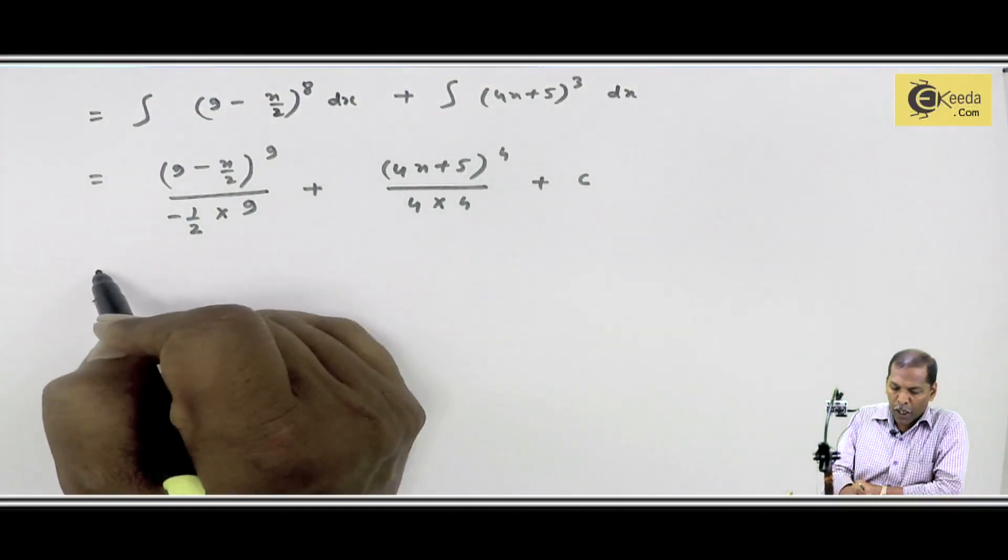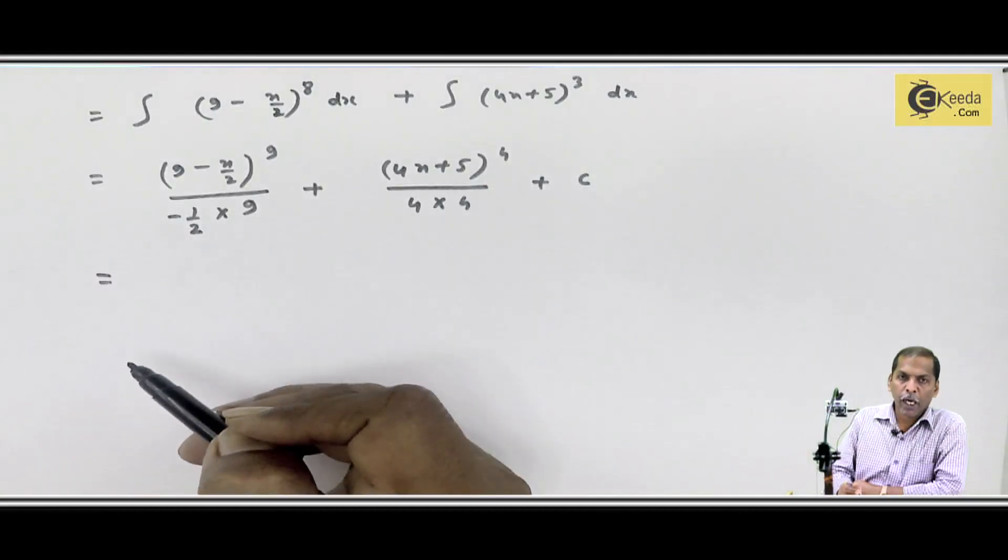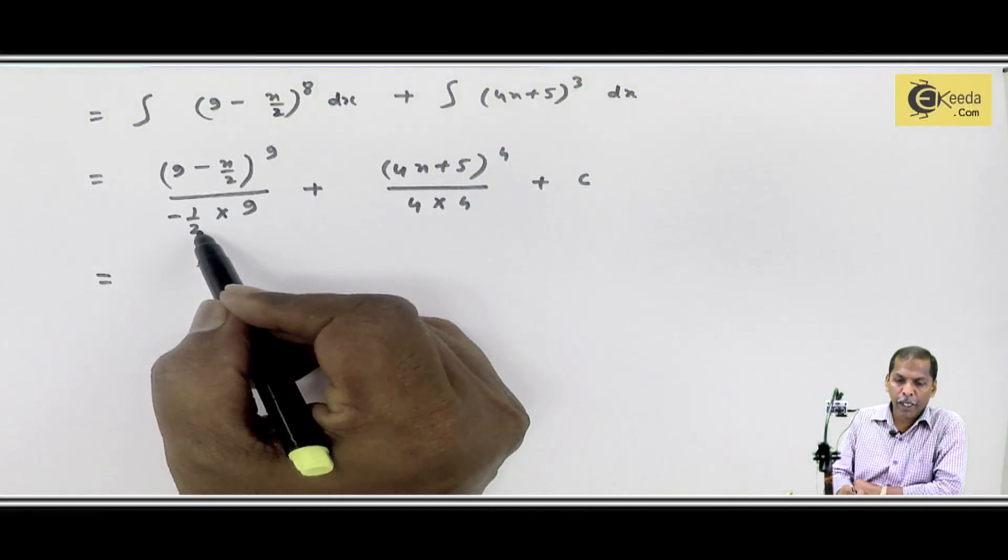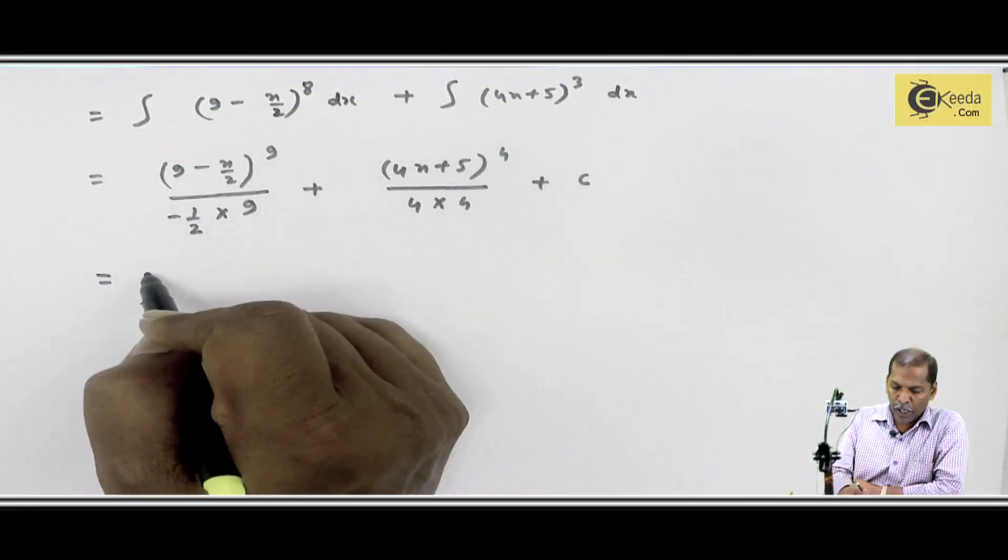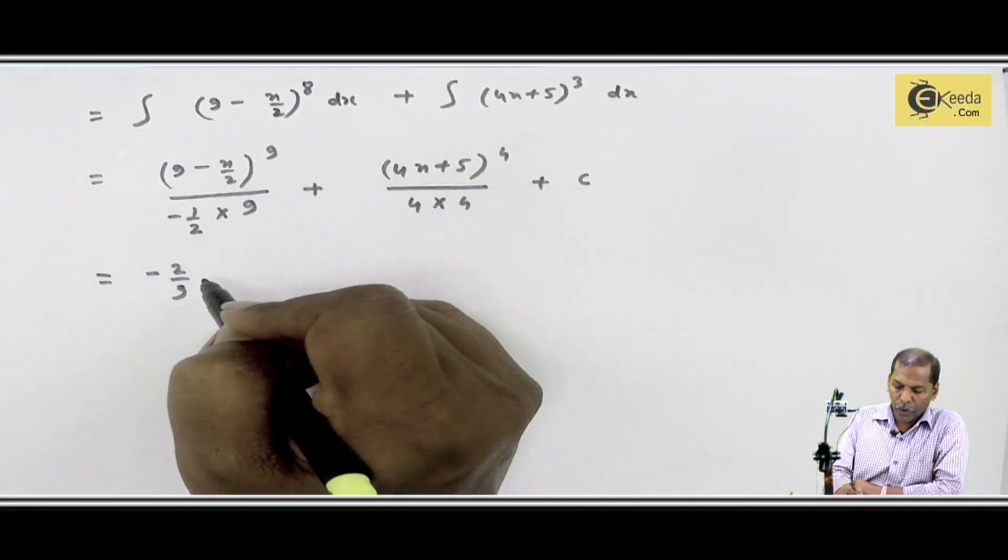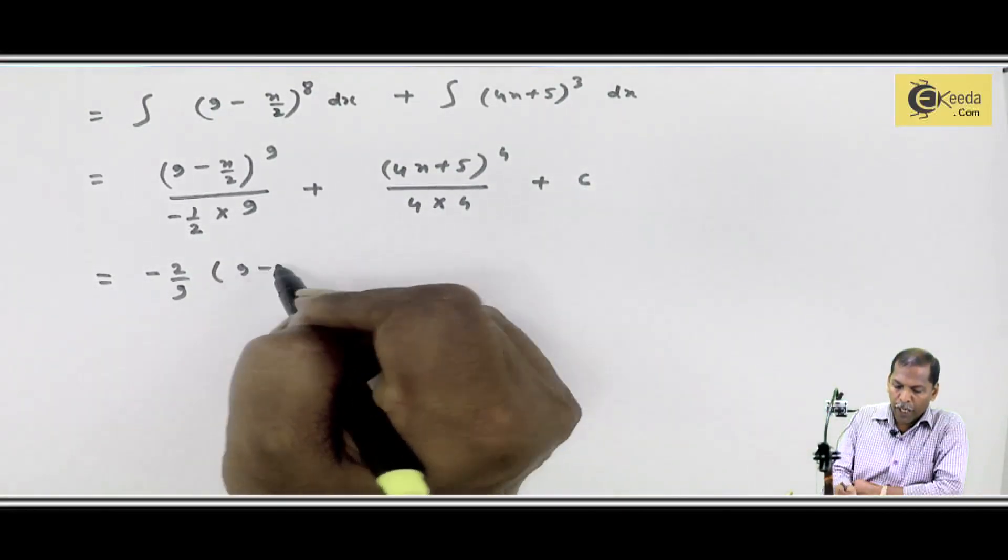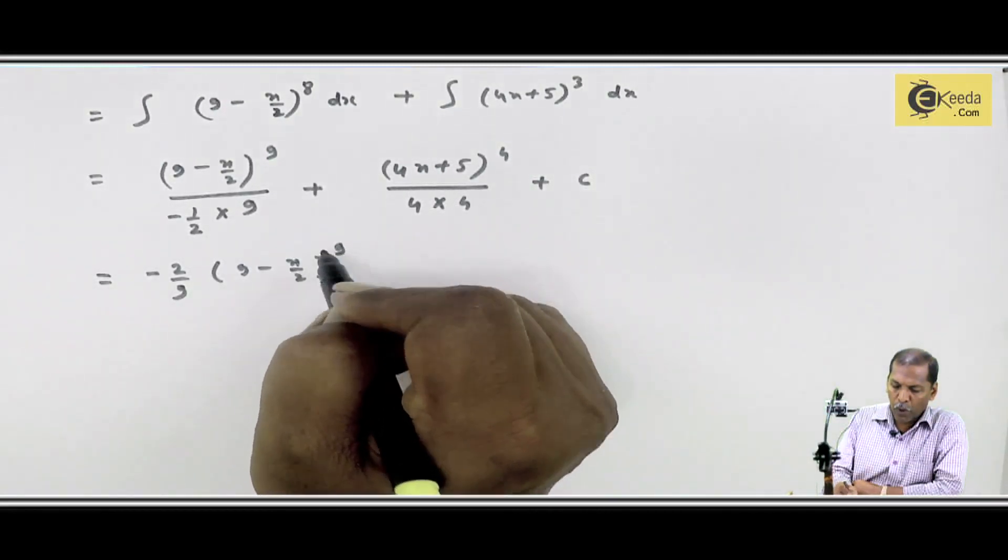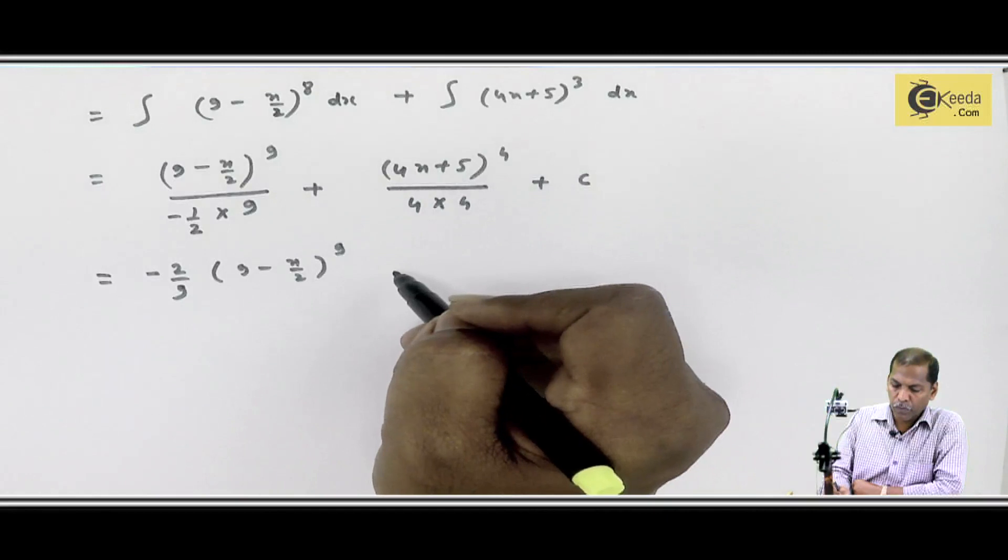Now if we solve this further, what will we get? This number 2 should go where? To the numerator. So the answer becomes minus 2 upon 9, bracket 9 minus x by 2 raised to 9, plus